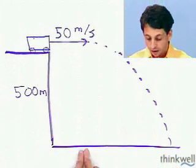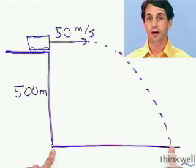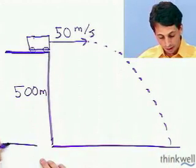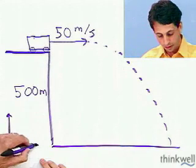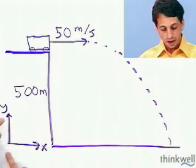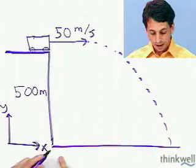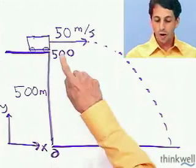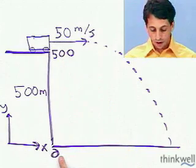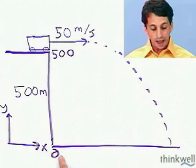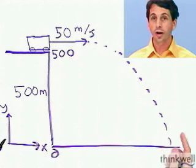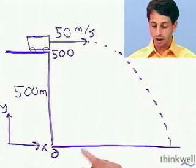If I was really being careful, which I really should be, I would pick a coordinate system. You should always pick a coordinate system when you start one of these problems. If I'm calling y up, and this was zero, and this was 500, y initial would be plus 500, y final would be zero, and a would be, in the y direction, negative 9.8 meters per second squared. Of course, it's zero in the x direction.